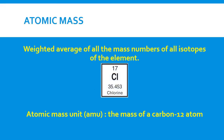The atomic mass — also called atomic weight or average atomic mass — is a weighted average mass of the atoms in a naturally occurring sample of isotopes. This weighted average reflects both the mass and the relative abundance of the isotopes as they occur in nature. Atomic mass is measured in atomic mass units (AMU), which is defined as one-twelfth of the mass of a carbon-12 atom.